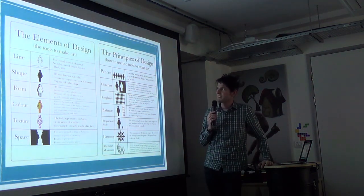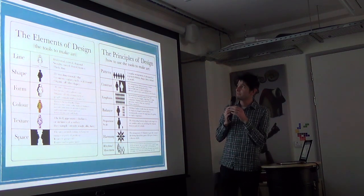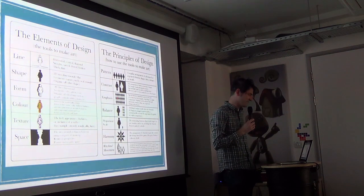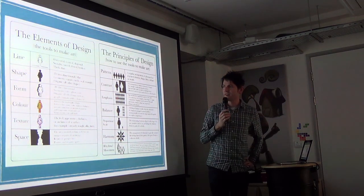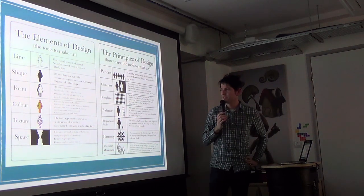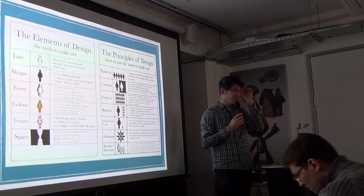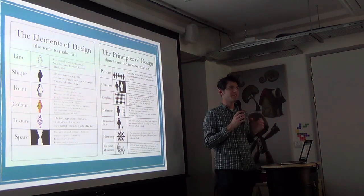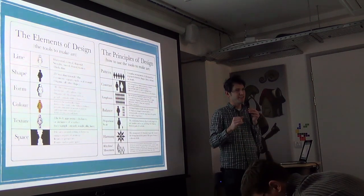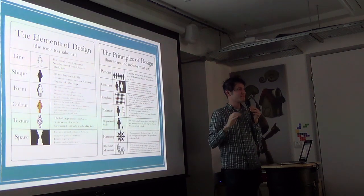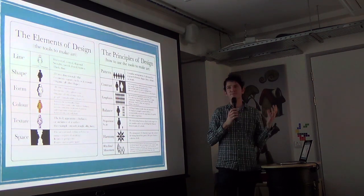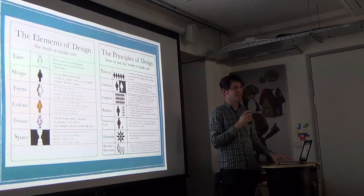Moving on to more visual things — these are the elements of design: line, shape, form, colour, texture, and space. And the principles of design: pattern, contrast, emphasis, balance, proportion and scale, harmony, rhythm, and movement. When working with artists or making your art, you need to think about all these things. A classic example: in a match-three game, you want to vary not just the colour of each gem but also the shape — it's not just for colourblind people, it helps everyone differentiate things in more than one way.